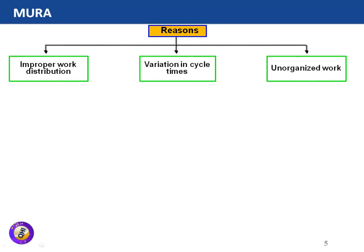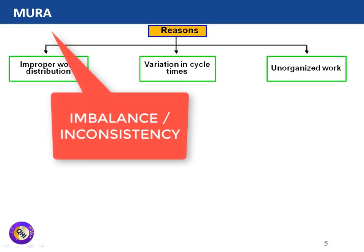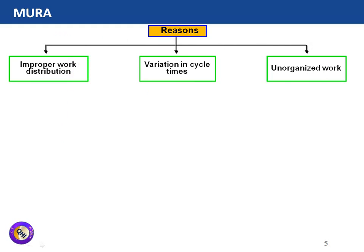The second area of improvement in 3M is Mura, which means imbalance. Imbalance or inconsistencies in the process are called Mura. The reasons for Mura can be various — for example, improper work distribution to people or machinery leads to Mura. Variation in cycle time across manufacturing or service steps also leads to inconsistencies. An unorganized workplace can likewise lead to inconsistencies.